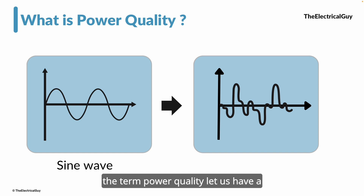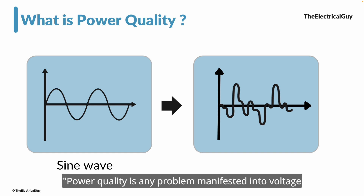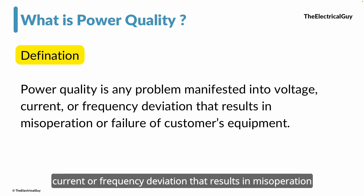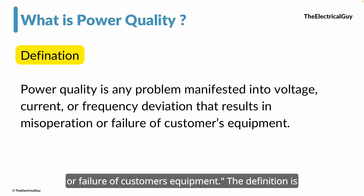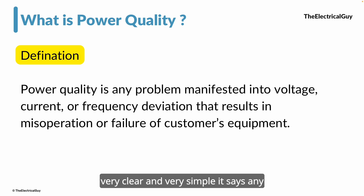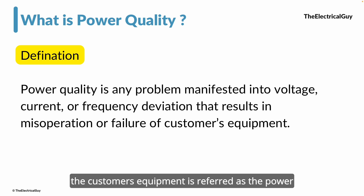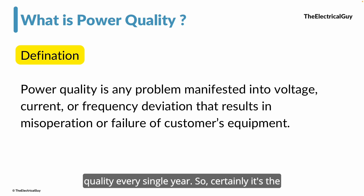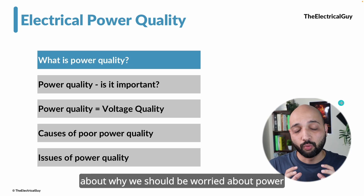Let's look at a proper definition of power quality: power quality is any problem manifested in voltage, current, or frequency deviation that results in misoperation or failure of a customer's equipment. Any problem in voltage, current, or frequency that causes misoperation or failure is a power quality issue. As mentioned, more than 300 billion dollars are lost because of poor power quality every single year.